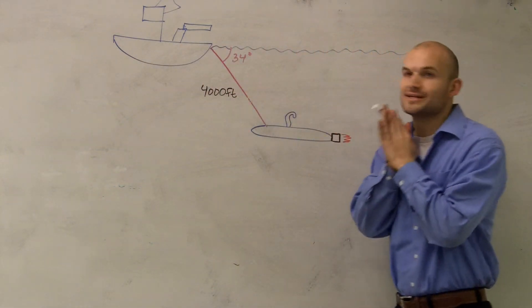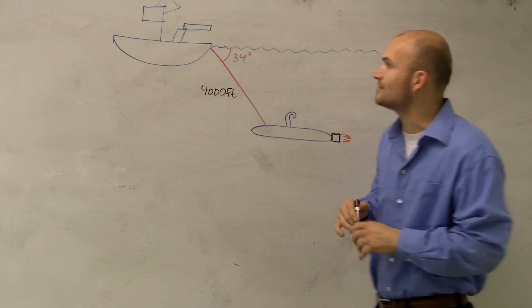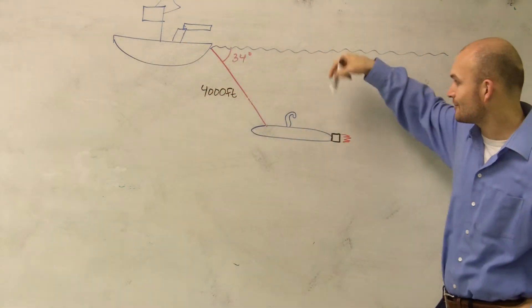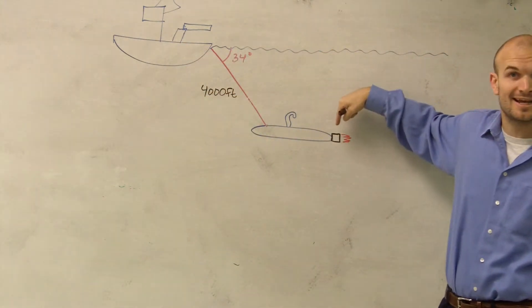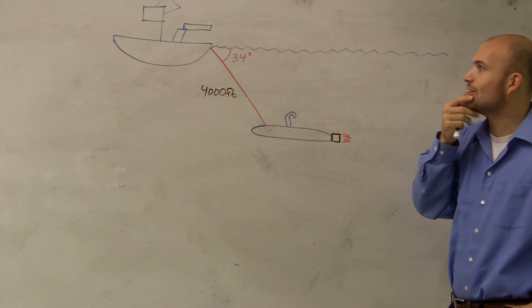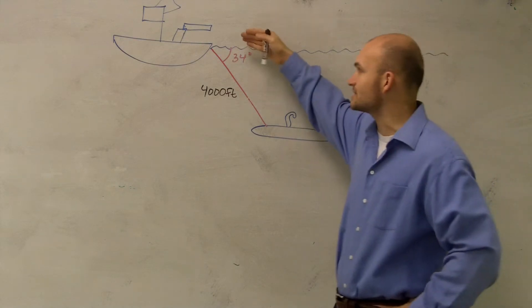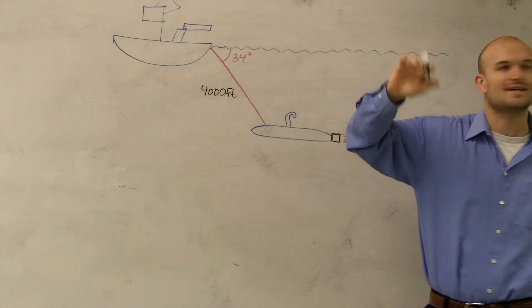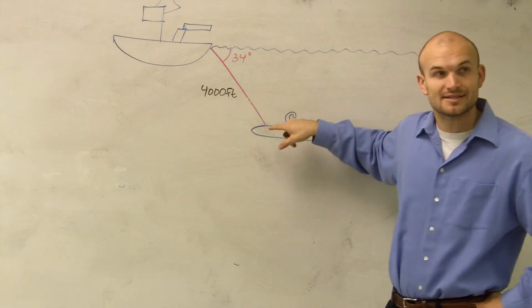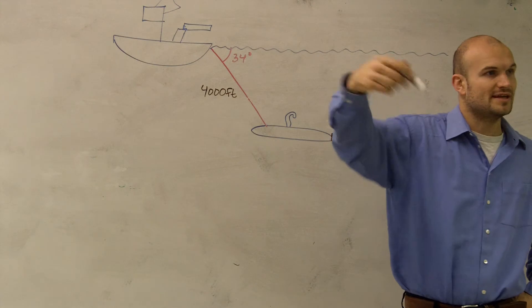Okay, what I want to do, ladies and gentlemen, is we just have this little word problem here. And part of the word problem says, you've got a warship, right, which I have here. And then I have a little submarine here with a nice hook and a turbo flame engine on the bottom. Through their sonar technology, they say that at a 34-degree angle, they're able to detect the submarine, and the length of that is about 4,000 feet.